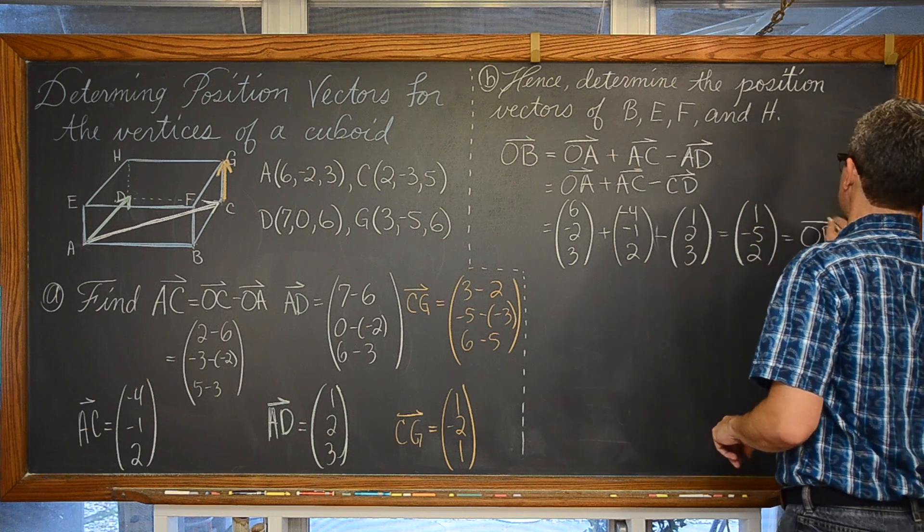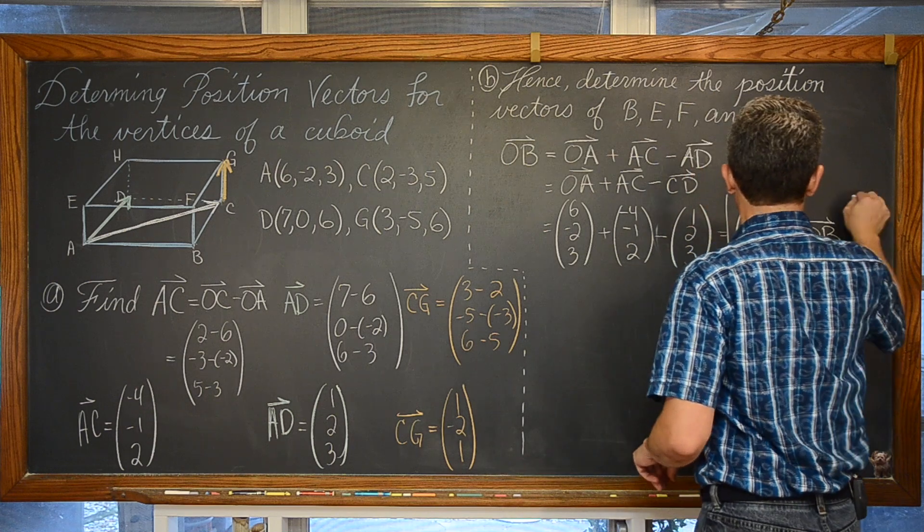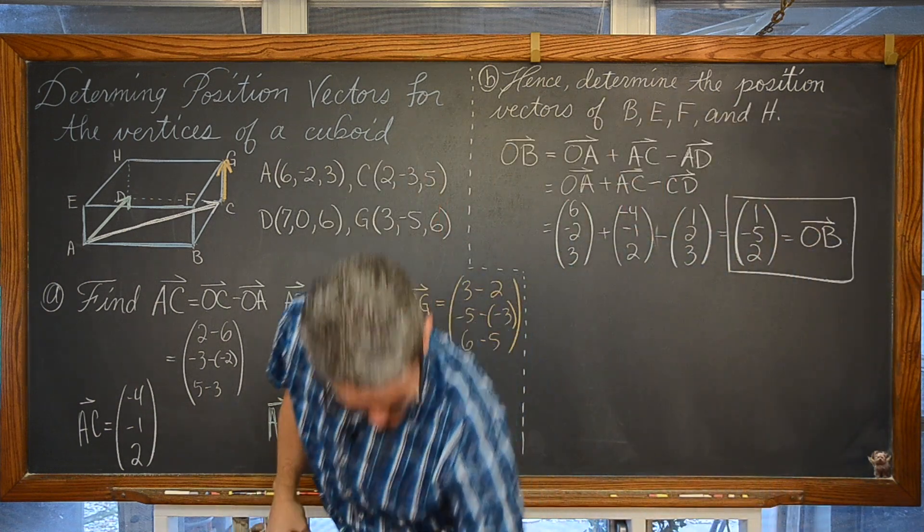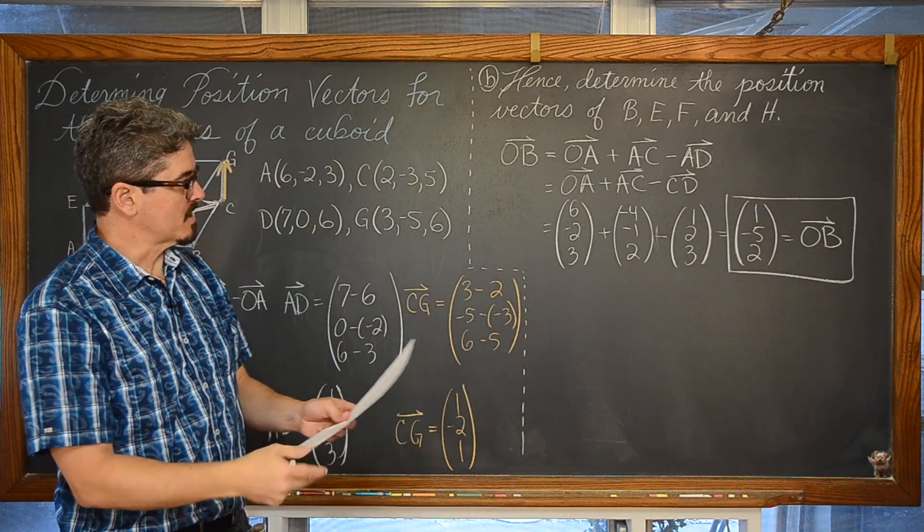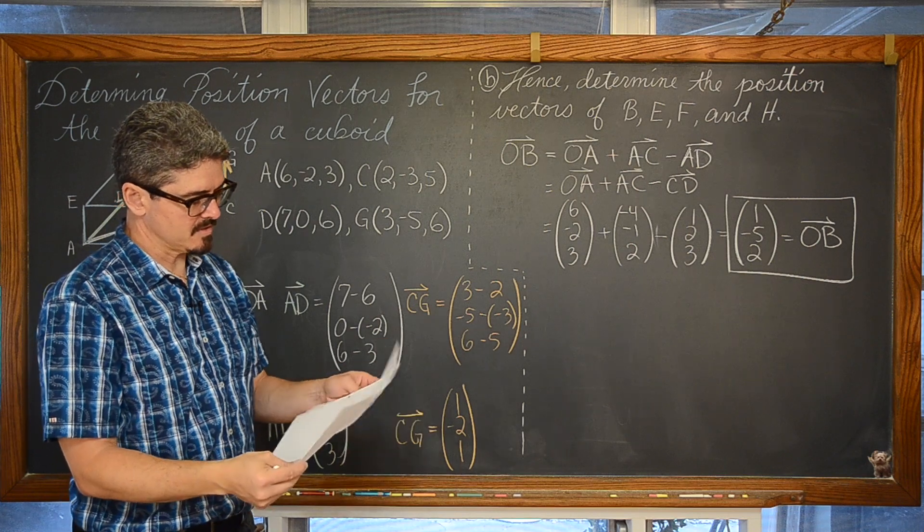And one more time, just for clarity, let's bring this notation over here. This is the position vector for vector OB, and I do want to check my work just to make sure I am not doing something silly.